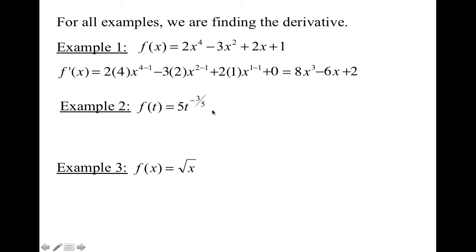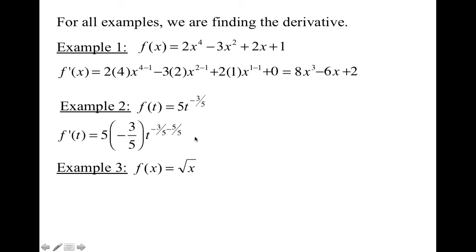This time our exponent is a fraction — that doesn't matter, we're still going to subtract 1. To subtract 1 from the fraction, we subtract 5 over 5. This fraction also multiplies the constant in front. When we subtract 5 over 5 from negative 3 fifths, we get negative 8 fifths, and the negative 3 remains because the 5s cancel.